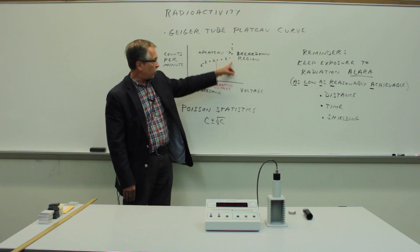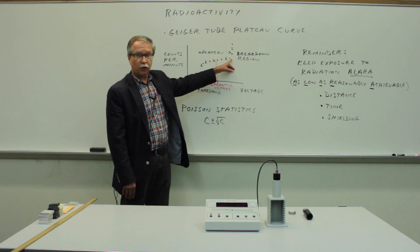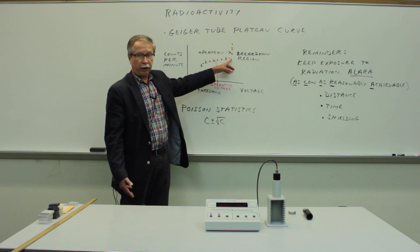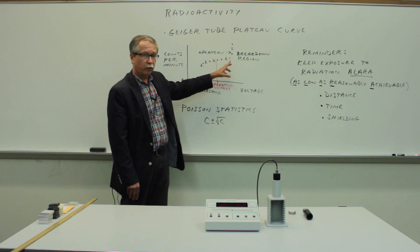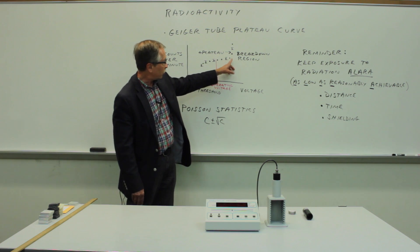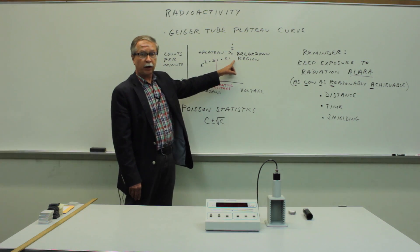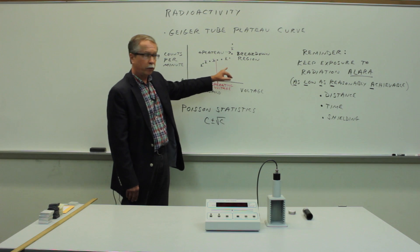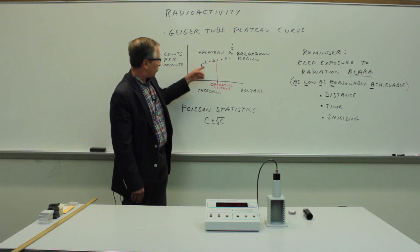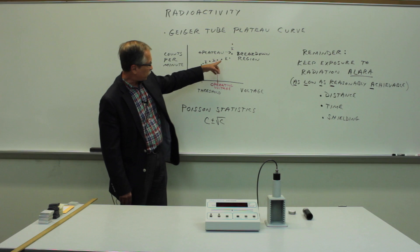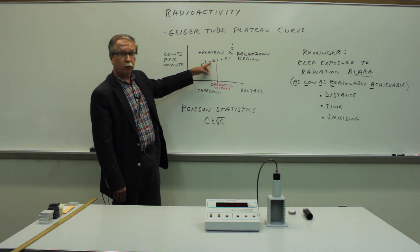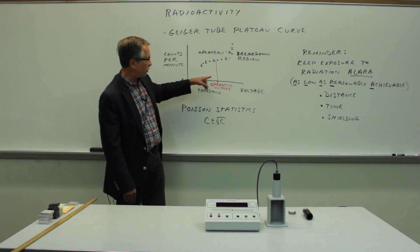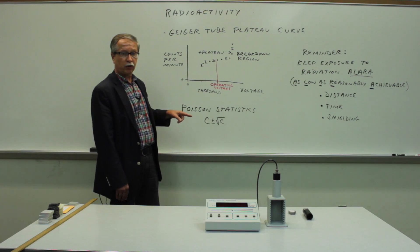Then you'll hit a voltage that will cause the tube to spontaneously ionize and that's not particularly good for the instrumentation. So you can measure a few points into the so-called breakdown region but don't go very far into it. That's really not good for the counter. So what we're looking for is the midpoint of this plateau region, the part that is slowly increasing and we'll choose that as the operating voltage.